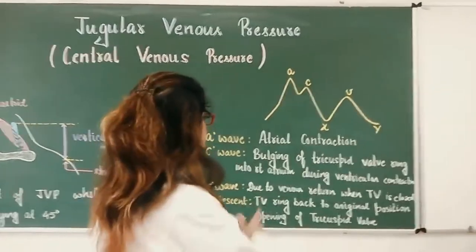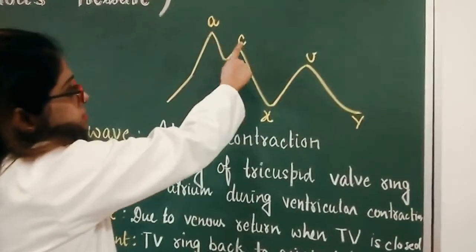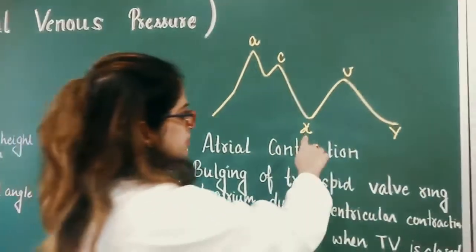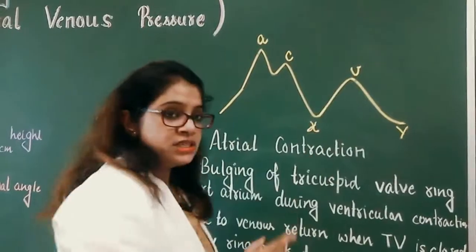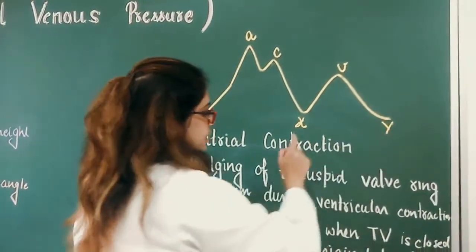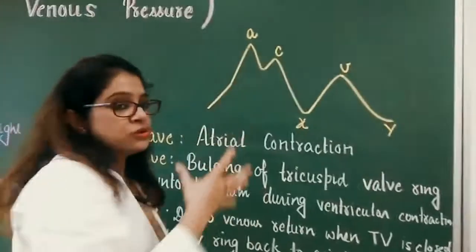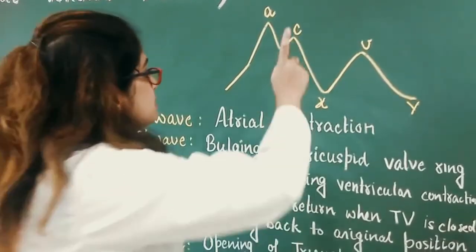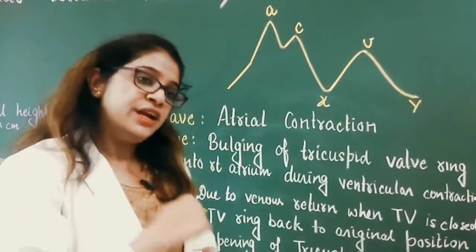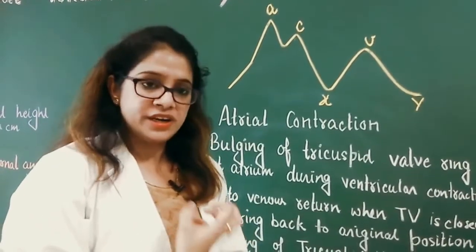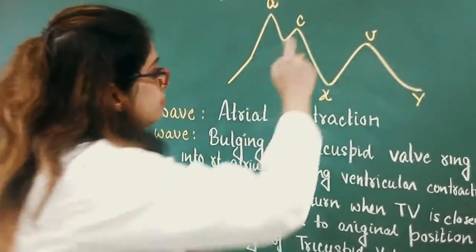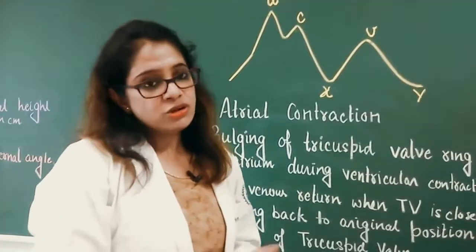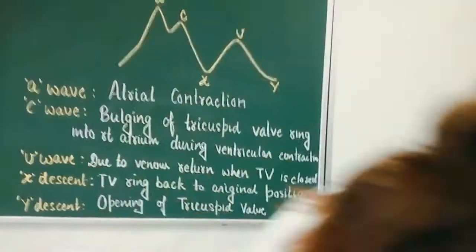The normal waveforms of the jugular vein include three waves: a, c, and v. The c wave is very small and mostly not visible. There are also two descents: x and y. Positive waves show increased pressure in the right atrium, and negative waves show decreased pressure. The a wave is due to atrial contraction, producing increased pressure in the right atrium.